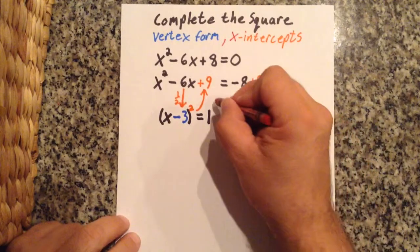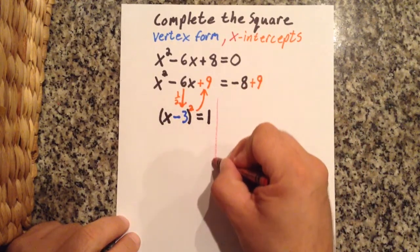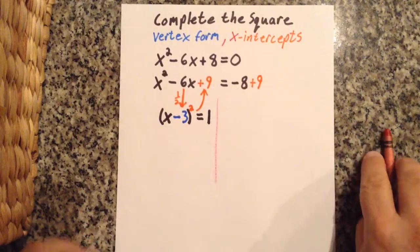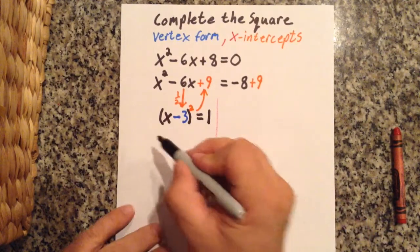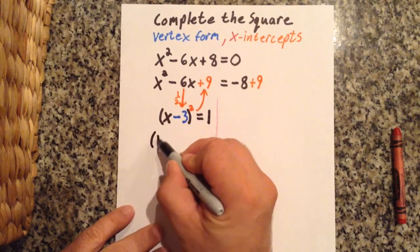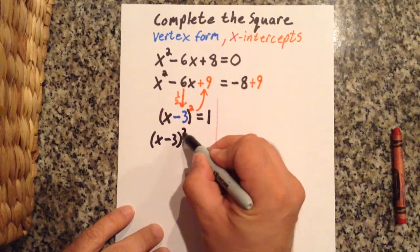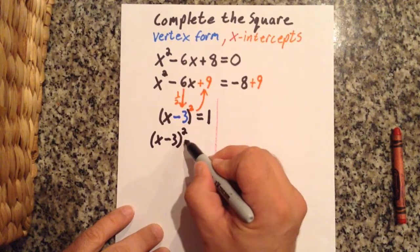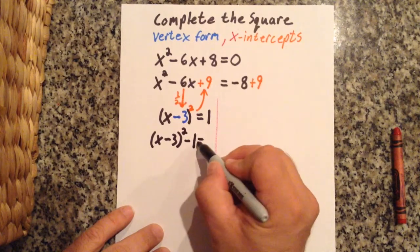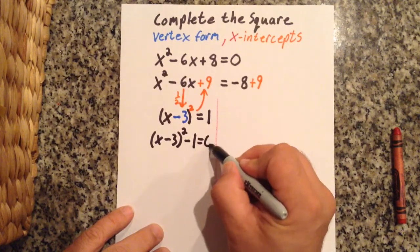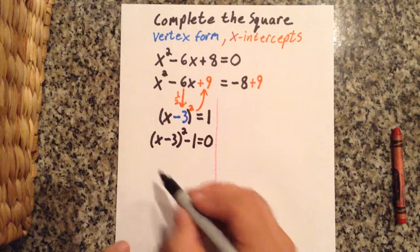I'm almost done finding the vertex form. So I'm going to split this into two separate situations: vertex form and intercepts. All I need to do now is bring that 1 over to the other side, so that's going to give me minus 1 equals 0. Now that's the vertex form of a quadratic equation.